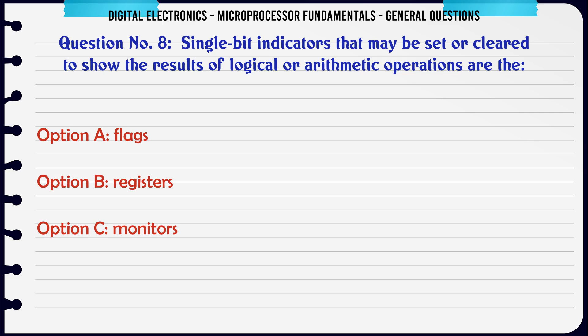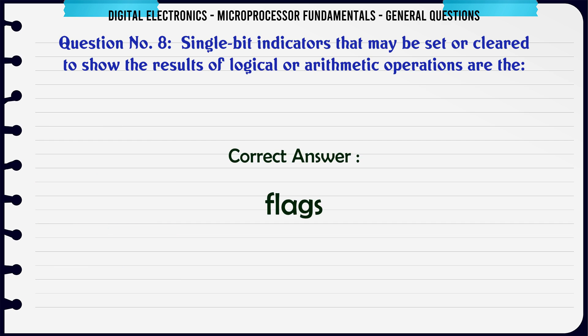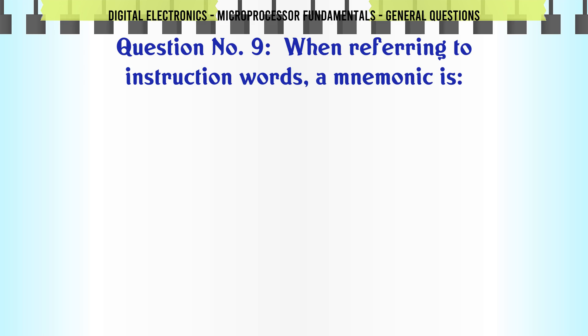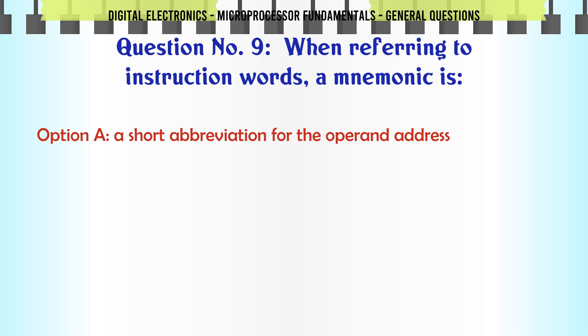Single bit indicators that may be set or cleared to show the results of logical or arithmetic operations are the: A. Flags, B. Registers, C. Monitors, D. Decisions. The correct answer is Flags.